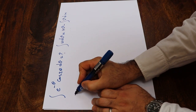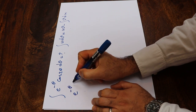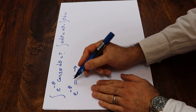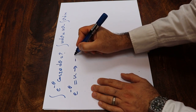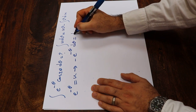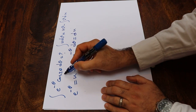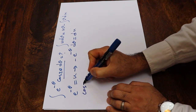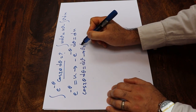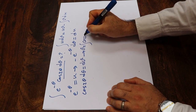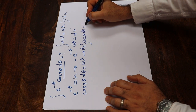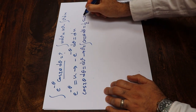If I define e to the power of minus theta as u, then taking the derivative from each side gives minus e to the power of minus theta d theta equals du. And if I define cosine 2 theta d theta as dv, therefore v will be equal to the integral of cosine 2 theta d theta, which equals 1 divided by 2 sine 2 theta.